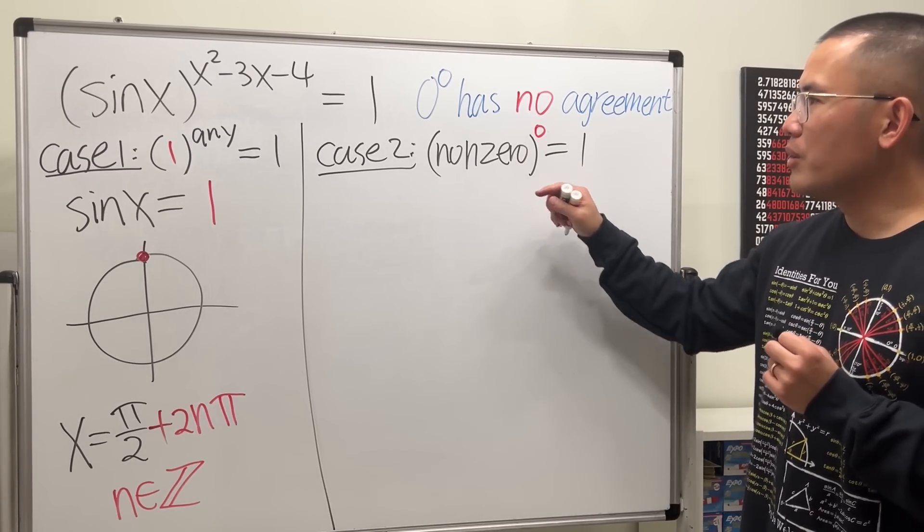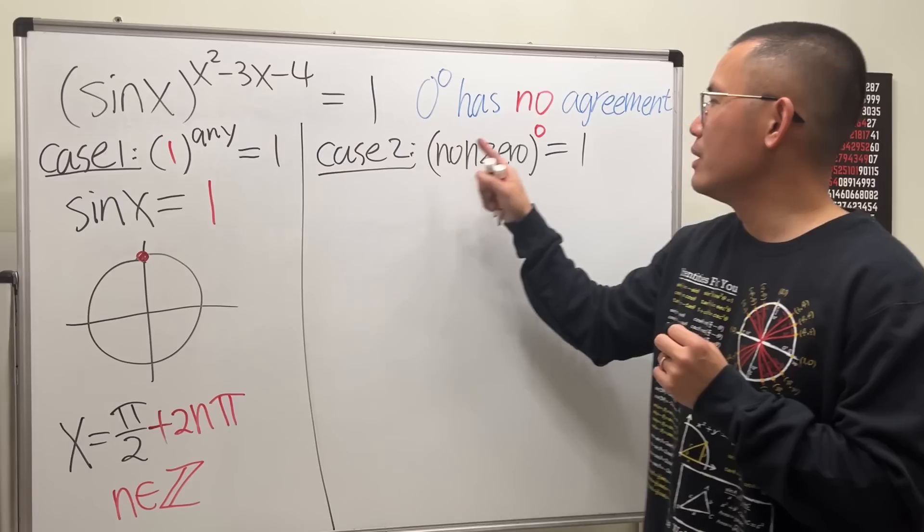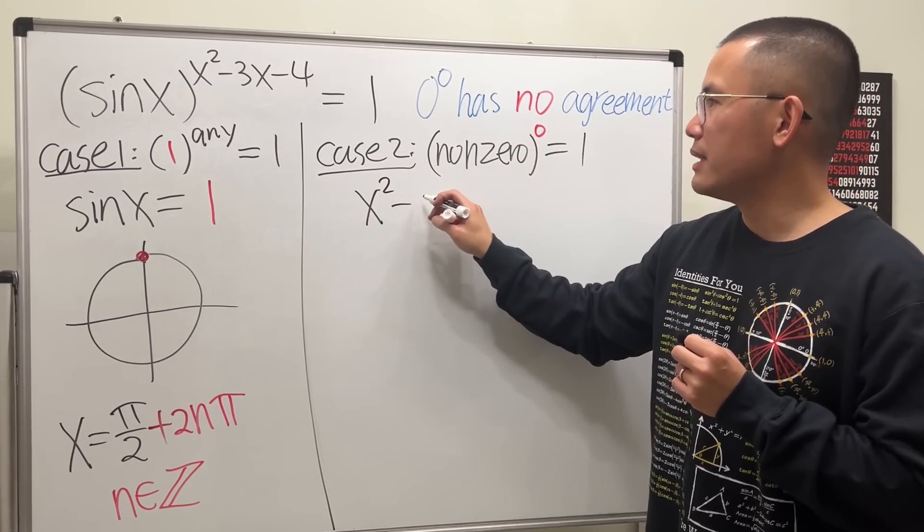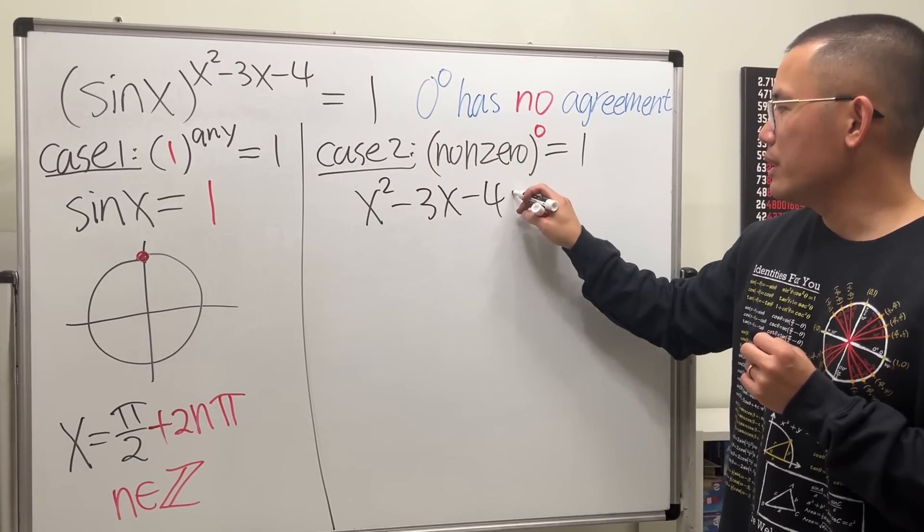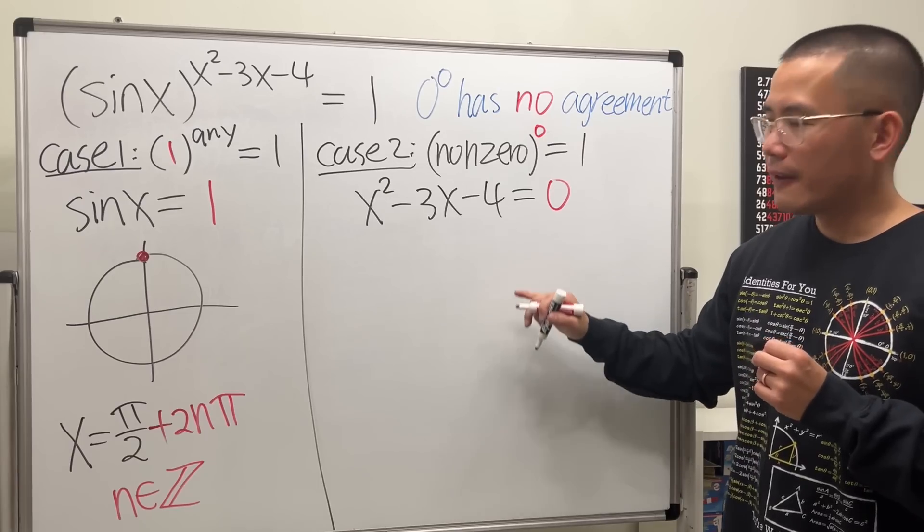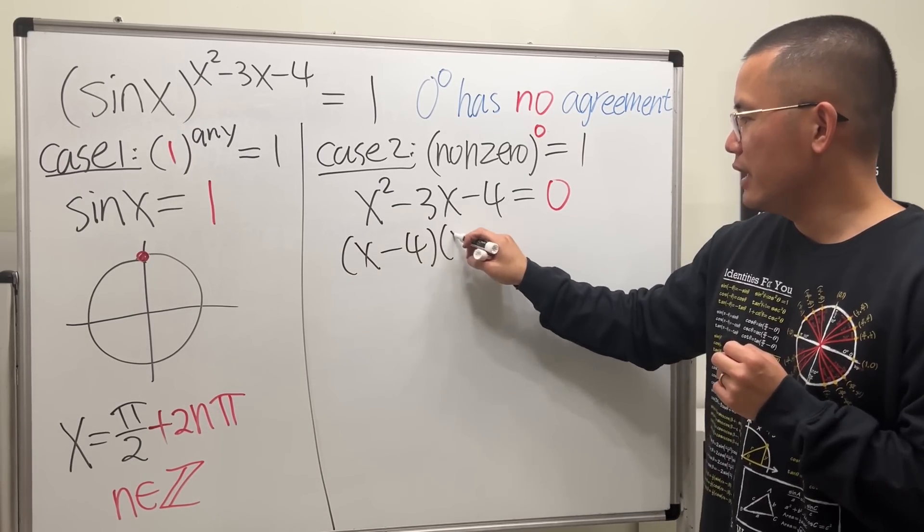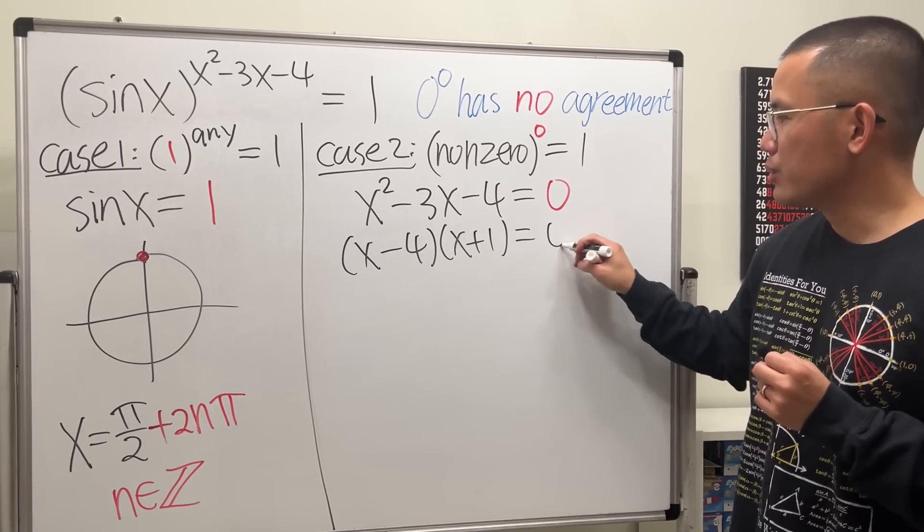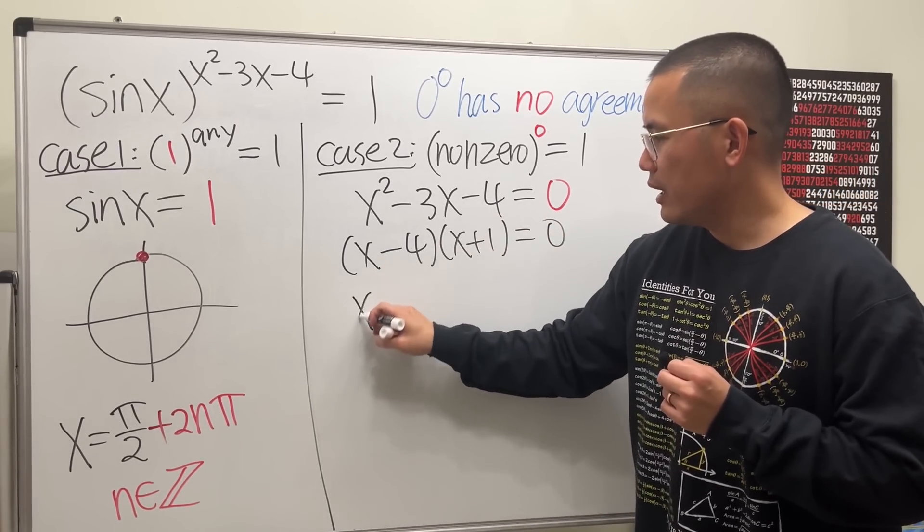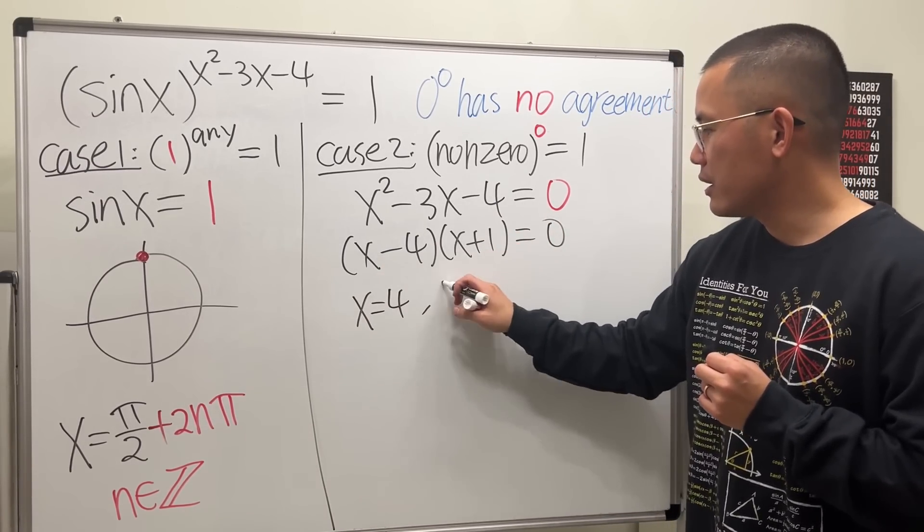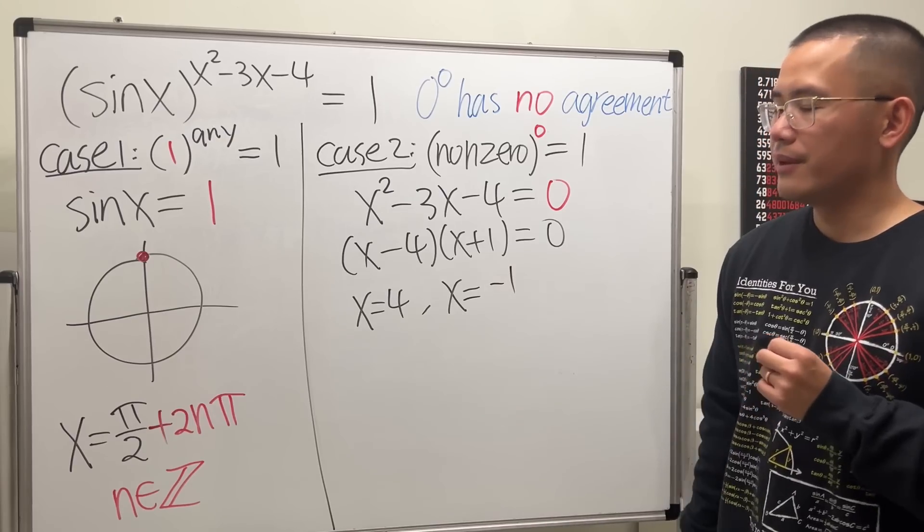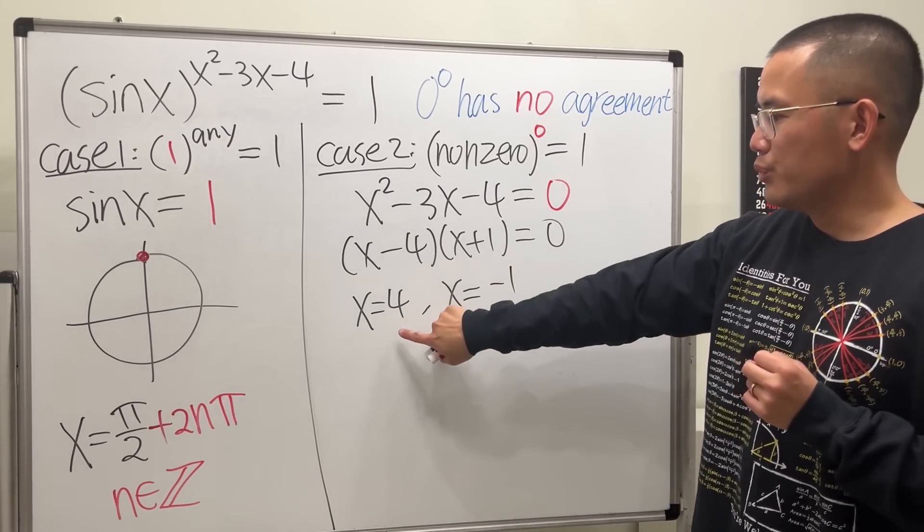So non-zero to zero's power equals 1. That being said, we just need to worry about the power equals to zero. So x squared minus 3x minus 4 equals 0. Factor this real quick: x minus 4, x plus 1, equal to 0. From here, we get x equals 4. From here, we get x equals negative 1.